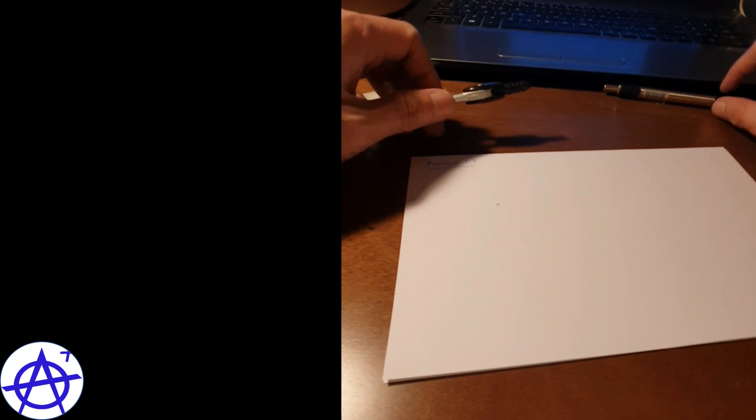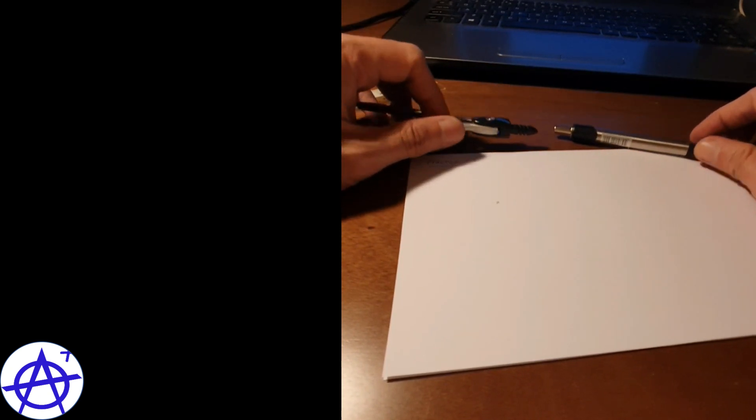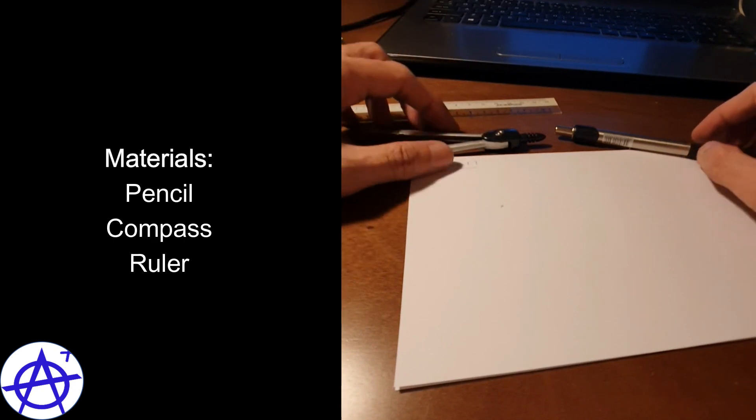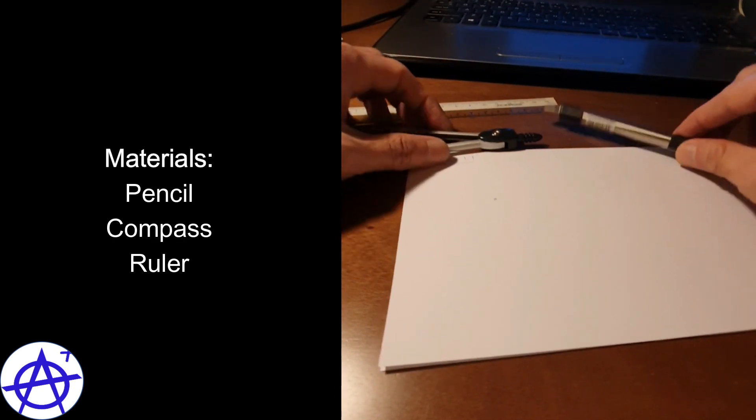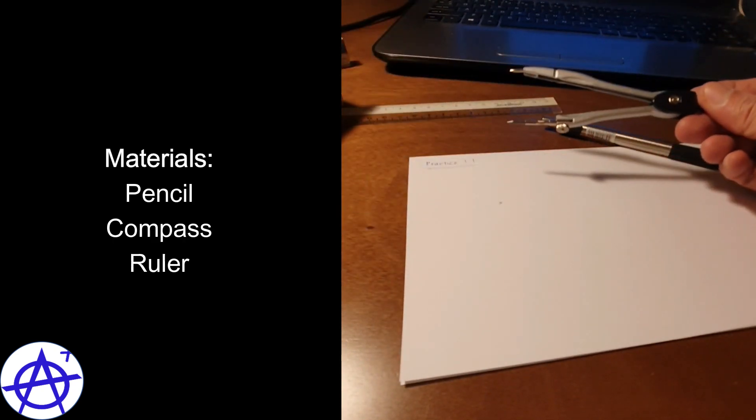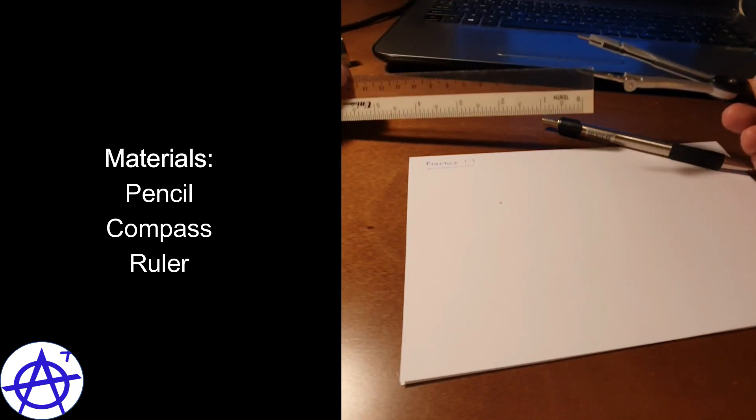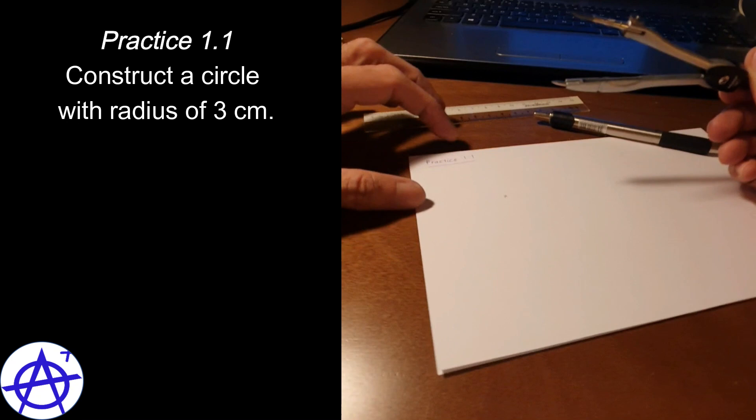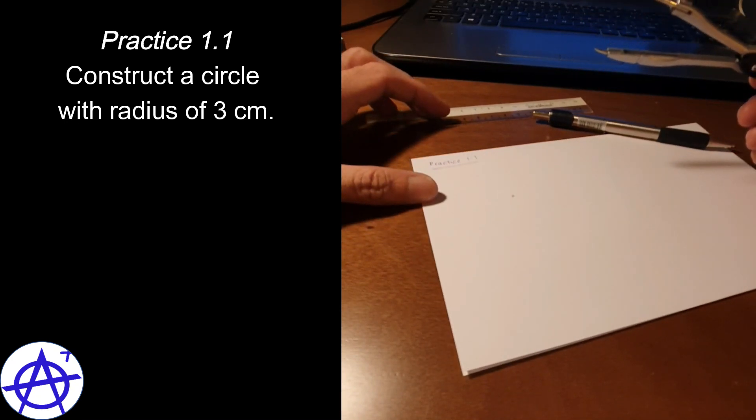Okay, let's start geometrical constructions. For this topic we only need three items: pencil, a pair of compasses, and a ruler. Let's try the first practice, practice 1.1. How do we construct a circle with radius of 3 cm?